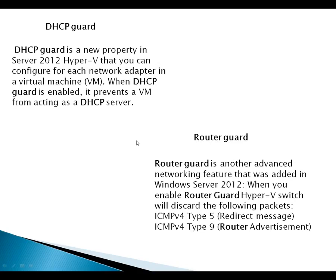Router Guard is another advanced networking feature added in Server 2012. When you enable Router Guard, Hyper-V will discard the following packets: ICMP version 4 type 5 redirect messages, and ICMP version 4 type 9 router advertisements. This is the basic functionality of Router Guard, and this feature is not available with Server 2008 — it is available with Server 2012 only. This is also one of the greatest features added with Server 2012.